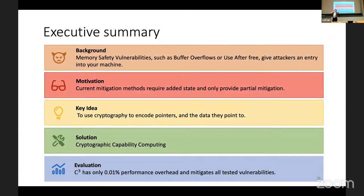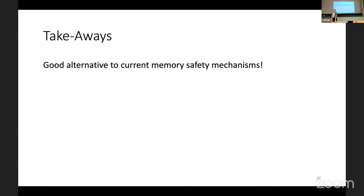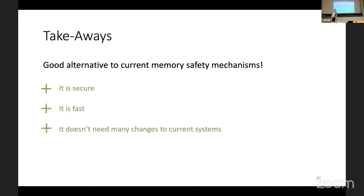To summarize: there are memory safety vulnerabilities such as buffer overflows or use-after-free that give attackers an entry into the machine. Current mitigation systems require added state. Cryptographic Capability Computing was proposed to solve this issue and performs very well, mitigating all tested vulnerabilities. My takeaway is that this would be a good alternative to current memory safety mechanisms because it's secure, really fast, and doesn't need many changes to current systems. There's also opportunity for further research.